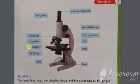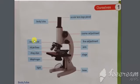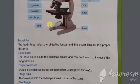The first part is the body tube. The body tube is basically used to hold the lenses and to keep them at a proper distance. Then the nose piece — the nose piece holds the objective lenses and also increases their magnification. The objective lenses basically increase the magnification and magnify the object.